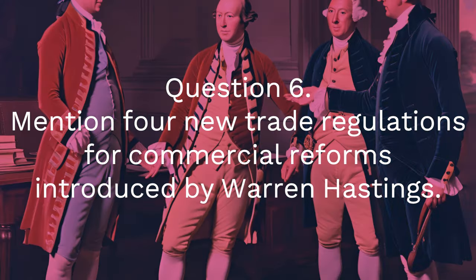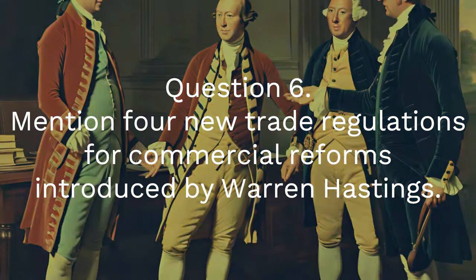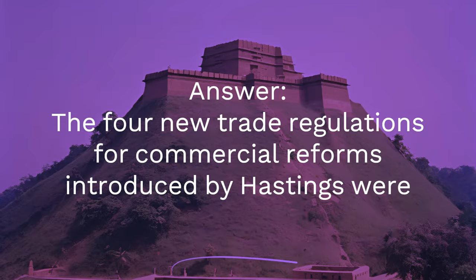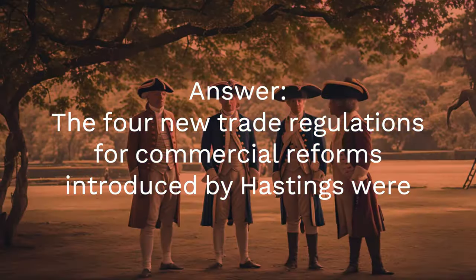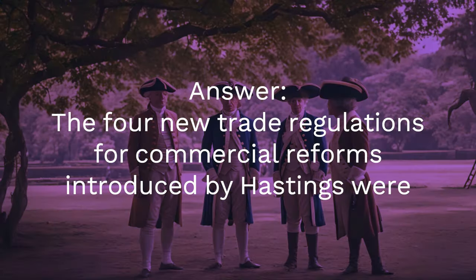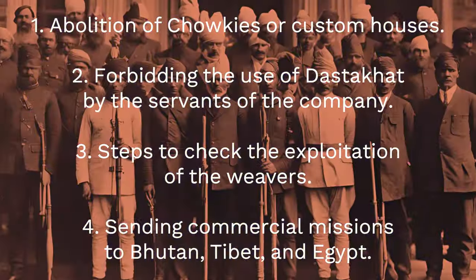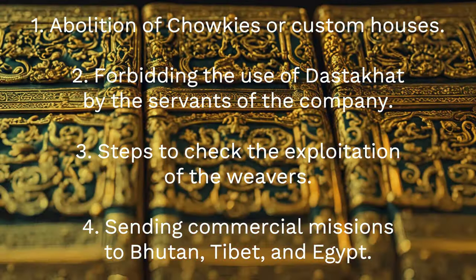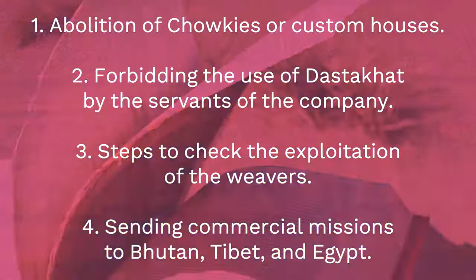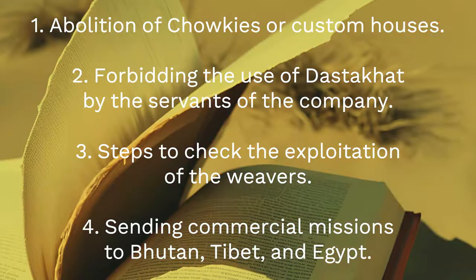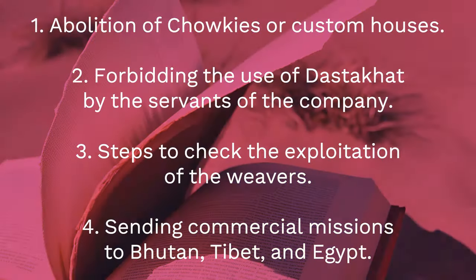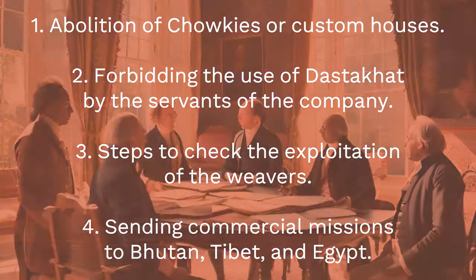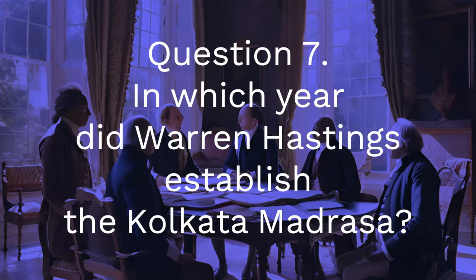Question 6: Mention four new trade regulations for commercial reforms introduced by Warren Hastings. Answer: The four new trade regulations for commercial reforms introduced by Hastings were: one, abolition of chockeys or custom houses; two, forbidding the use of the dastak by the servants of the company; three, steps to check the exploitations of the weavers; four, sending commercial missions to Bhutan, Tibet and Egypt.